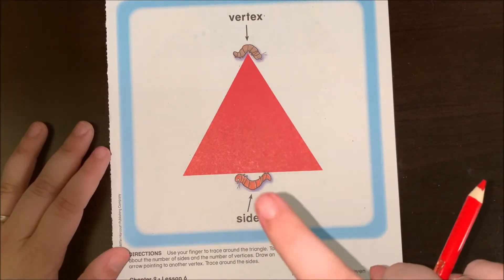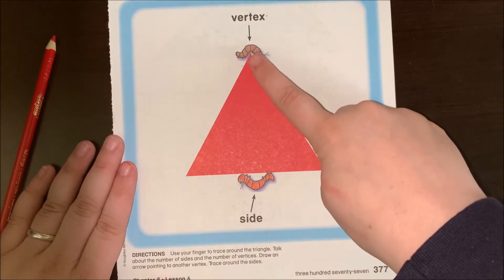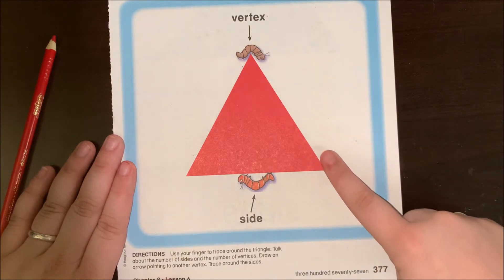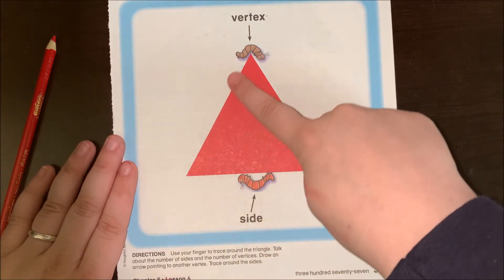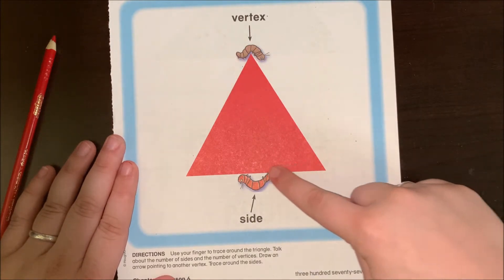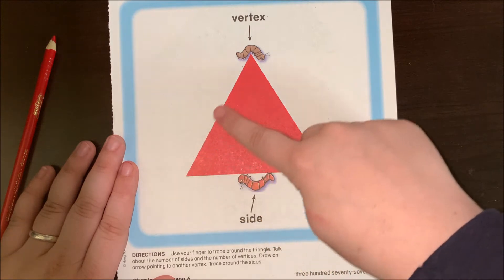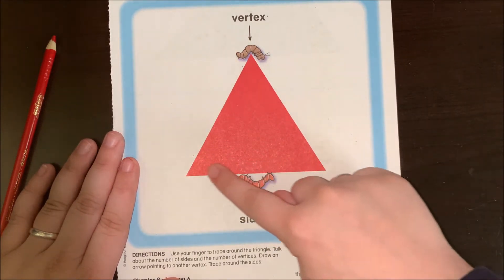Alright, so get your finger ready right now. Don't need your pencil. We're going to take our finger and trace around this triangle. Remember, another word for corner is vertex. So I see a vertex here, a vertex here, and a vertex here.